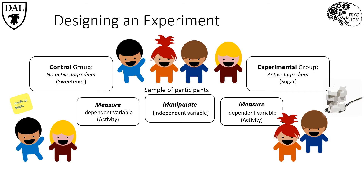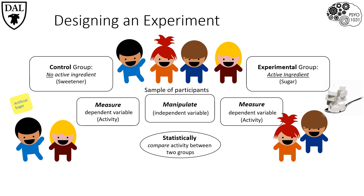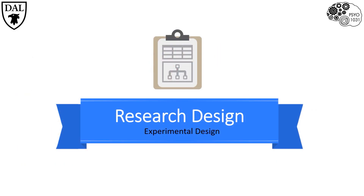If we see a difference in the activity level by statistically comparing the two groups, and notice that the activity levels for the children in the experimental group — those that received sugar — are higher than the children in the control group — those that did not receive sugar — we can conclude that the sugar caused this effect. This is because we have theoretically controlled all other possible variables, leaving the only change between the two groups being whether or not they received sugar. Further, if we don't see a difference between the two groups, then we can conclude that the sugar did not contribute to an increase in activity. That concludes our look at experimental design. Unlike other types of designs, it is only with experimental designs that we can test causative relationships.